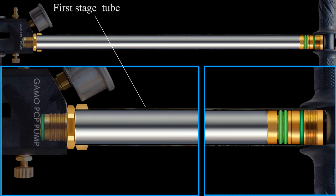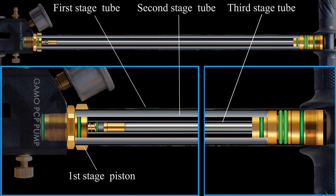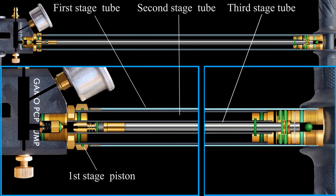The external tube is the first stage tube. First stage piston is installed in it. This piston moves around the second stage tube. Third stage piston moves in the third tube.